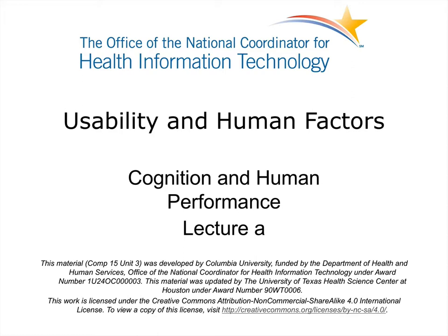Most emphasis will be based on information processing models in the context of a cognitive engineering approach. We will be talking about classical models of human information processing, including perception, attention, memory, and cognition. The implications for design will be illustrated in the context of gestalt organizing principles of perception. We will also introduce the concept of mental models and explain their role in understanding interactive behavior. The last topic will focus on distributed cognition, which represents a new way to understand human-computer interaction and challenges some concepts that are central to the conventional information processing models.